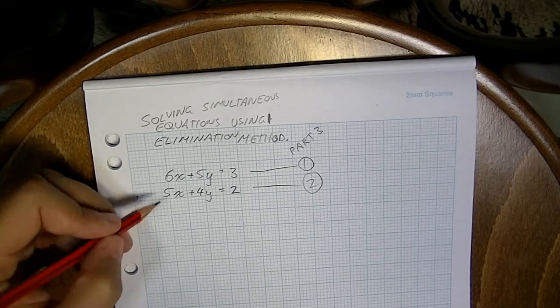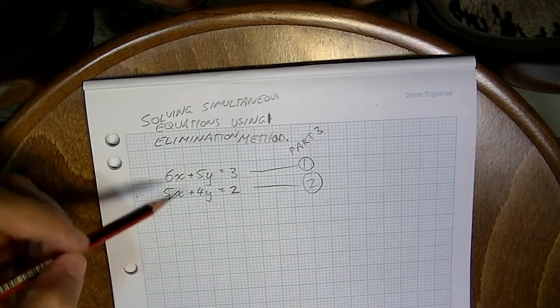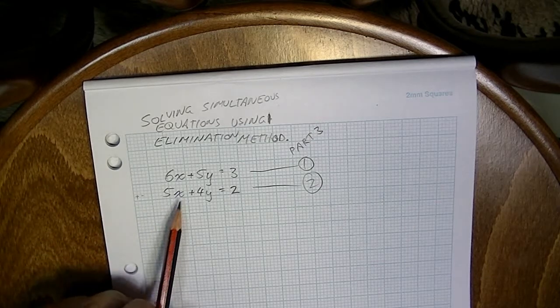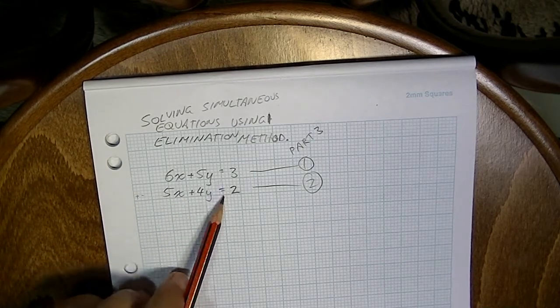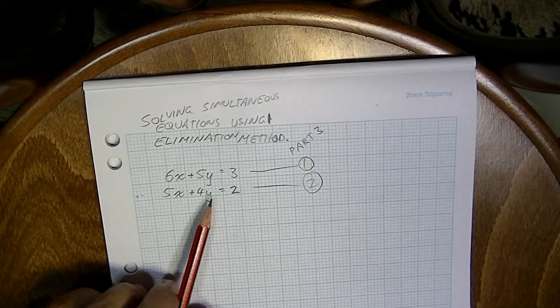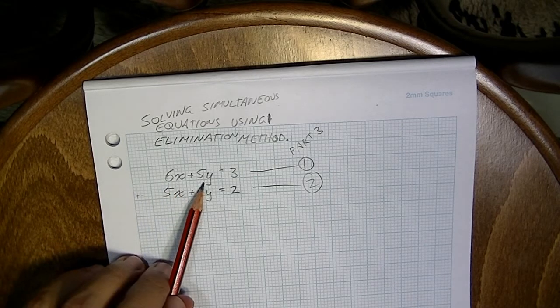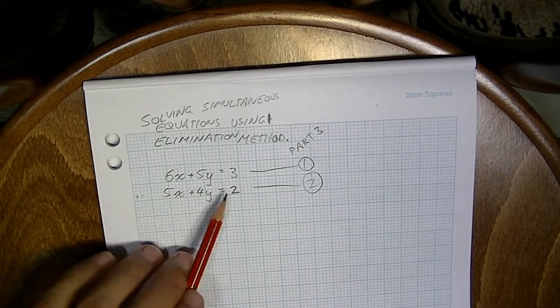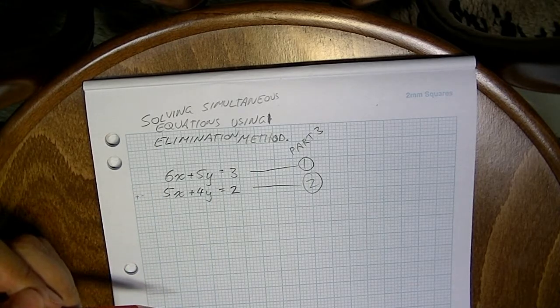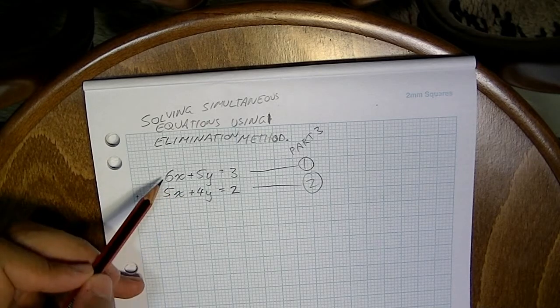In the last video you learned that you could multiply an entire equation by something and then eliminate using addition or subtraction. Now you might be racking your brain thinking which one am I going to multiply. If I multiply 5x and 4y by something, it doesn't look like it's going to give me anything that looks like a 6 and a 5. And same for equation one. So I can't do anything to just one of the equations.